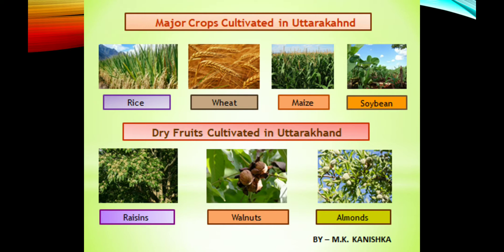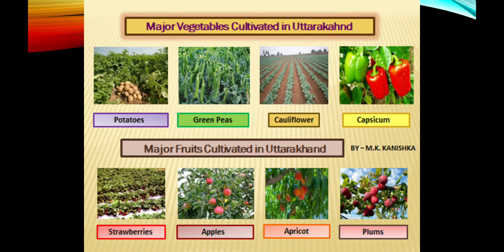Major crops cultivated in Uttarakhand include rice, wheat, maize, and soya bean. Dry fruits grown there include raisins, walnuts, and almonds. Major vegetables include potatoes, green peas, cauliflower, and capsicum. Major fruits include strawberries, apples, and apricots.